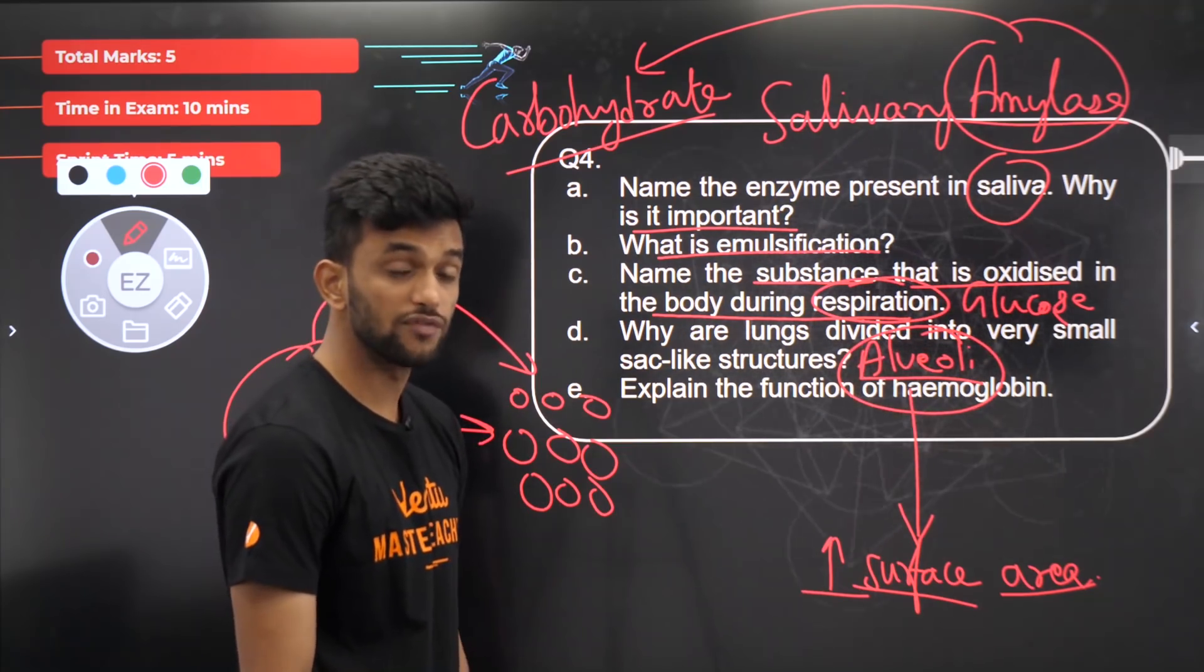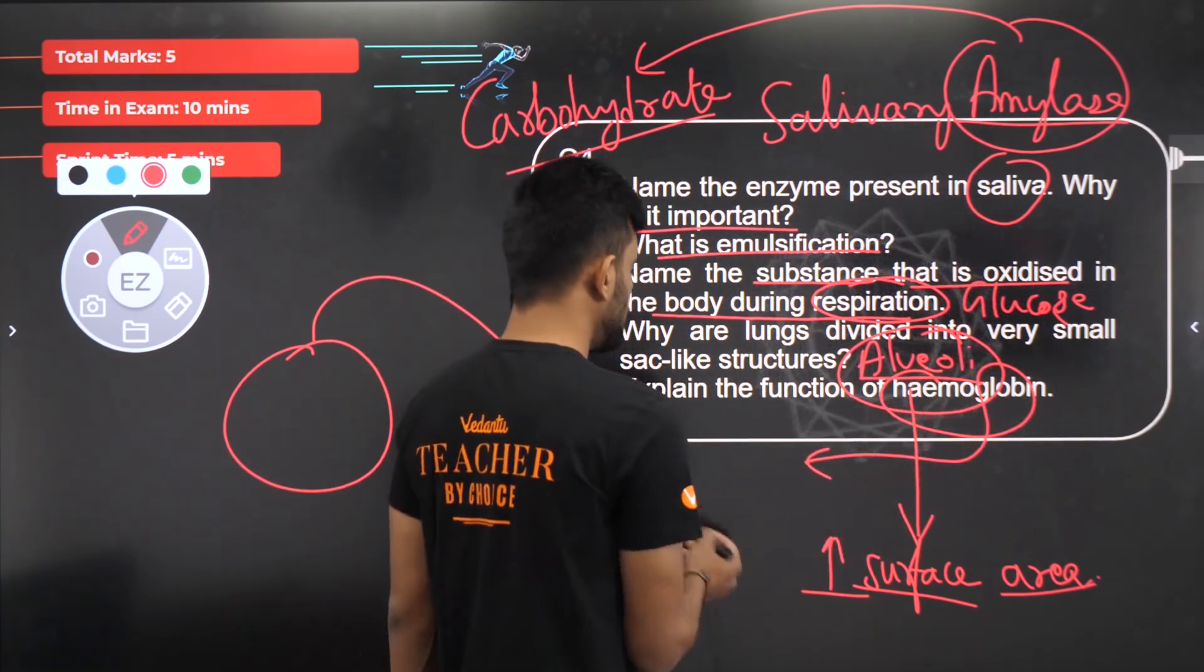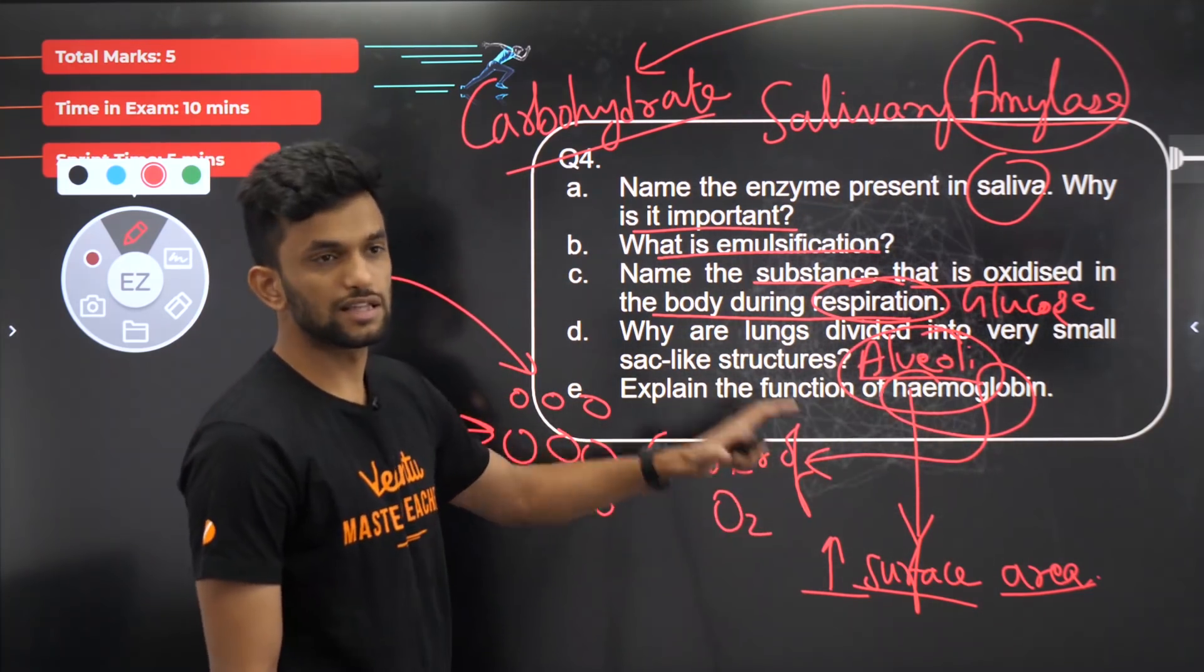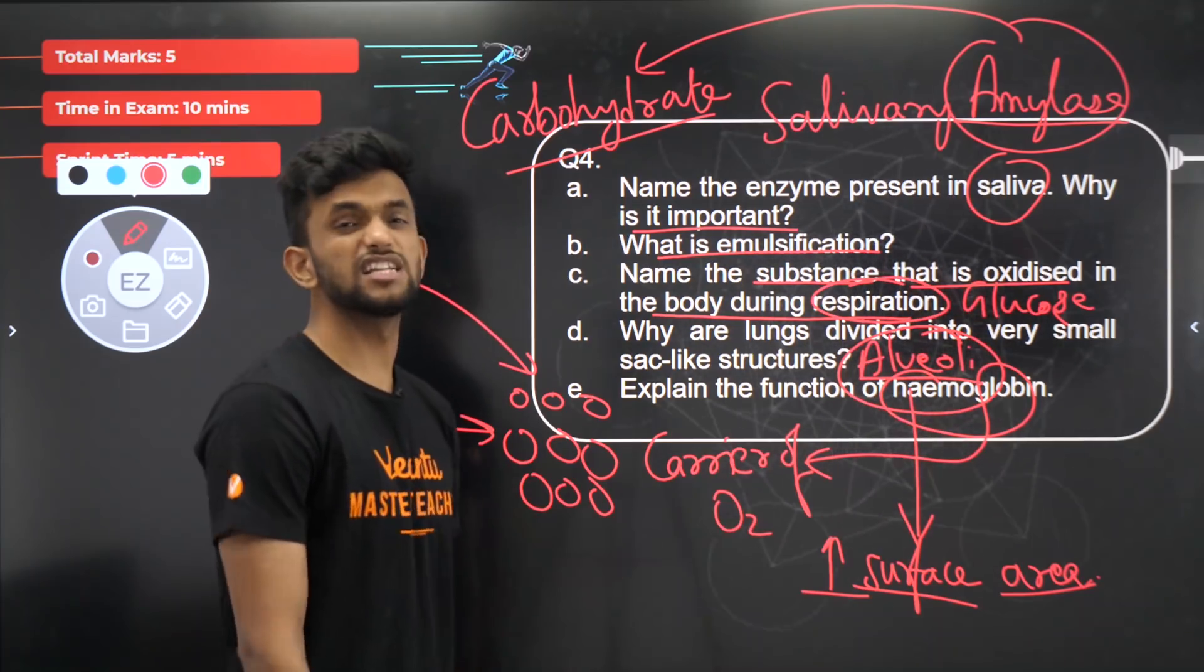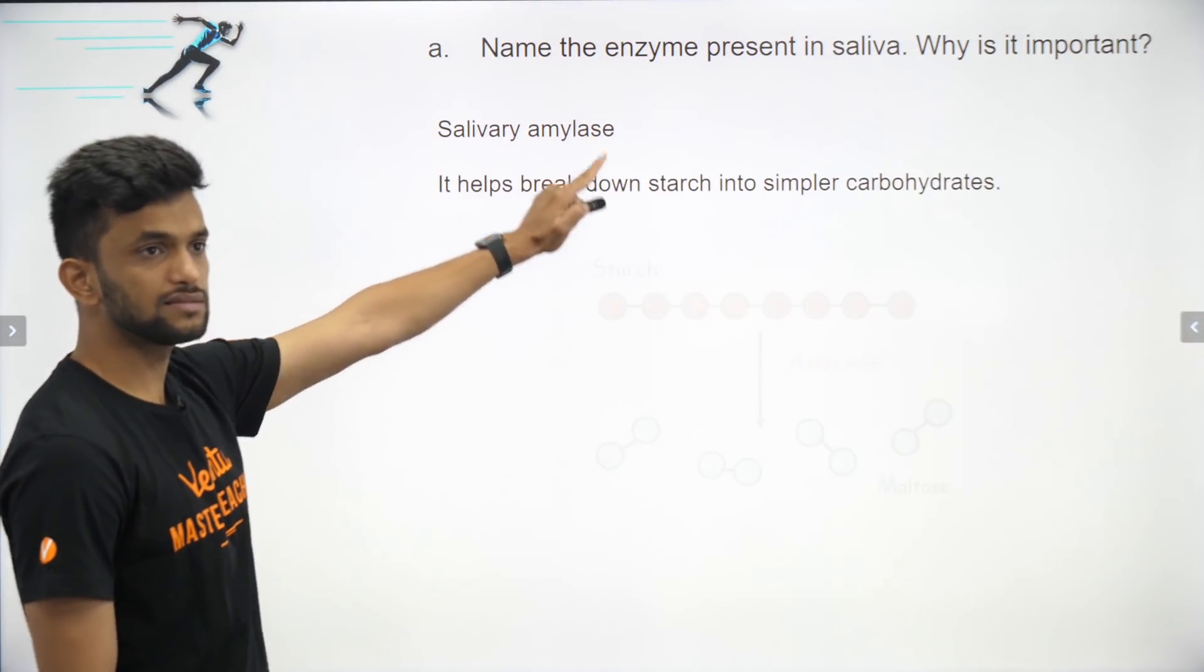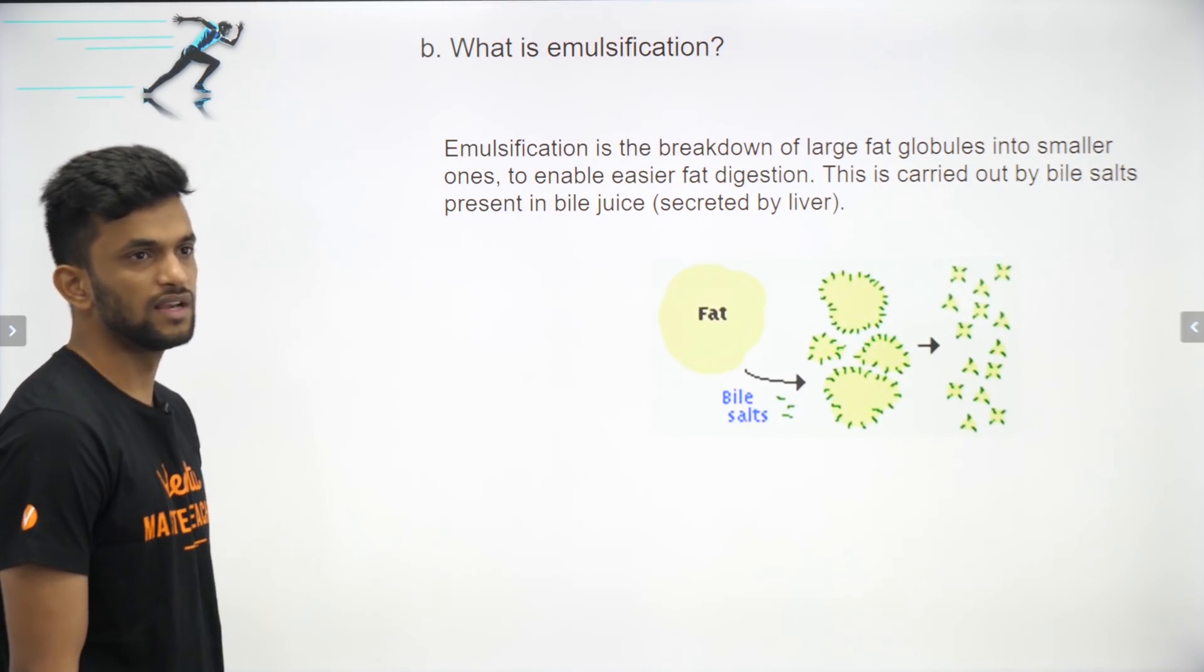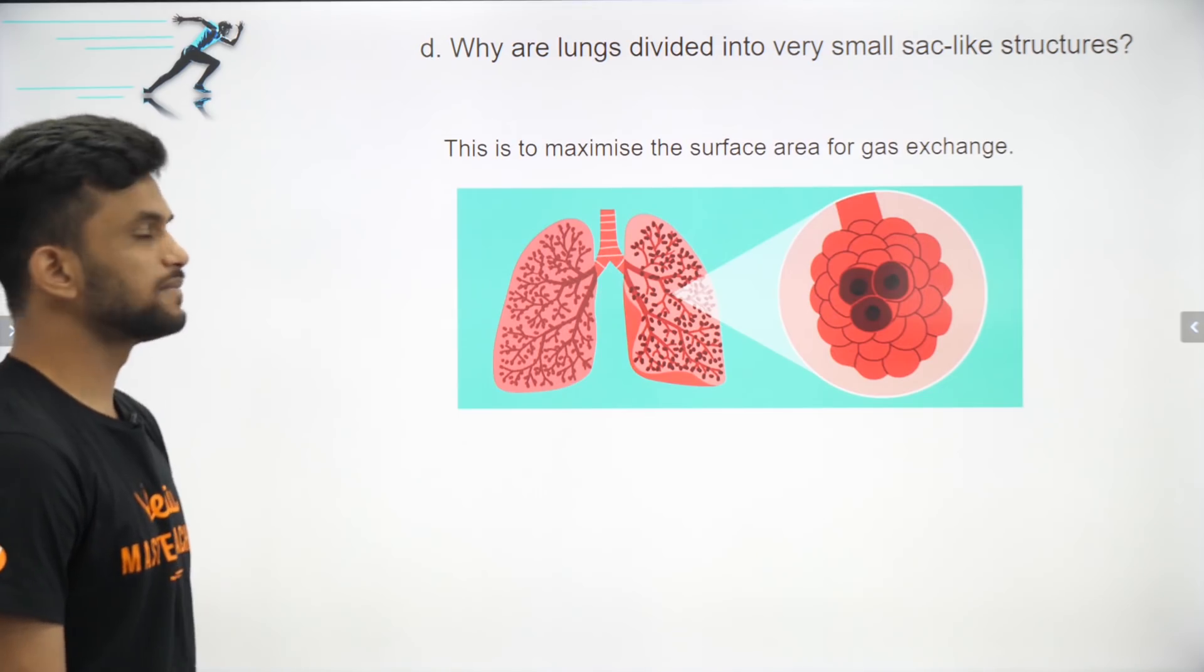Function of hemoglobin. Very easy - carrier of oxygen. Hemoglobin carries oxygen and carbon dioxide also, but mainly oxygen. Hemoglobin helps in transportation of gases. Where is hemoglobin present? It is present in the RBC or the red blood cell. Salivary amylase breaks down starch into simple carbohydrates. Emulsification is breakdown of fat globules into smaller ones to enable easy fat digestion, carried out by bile salts.